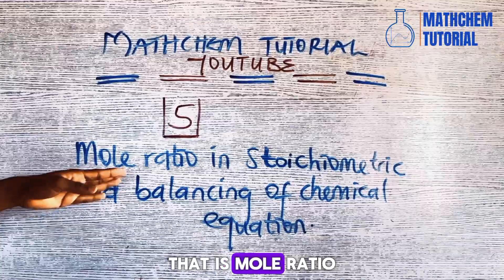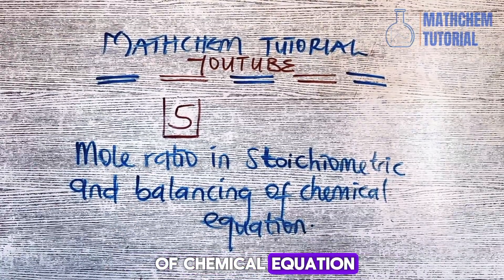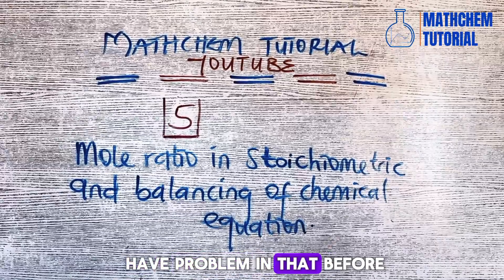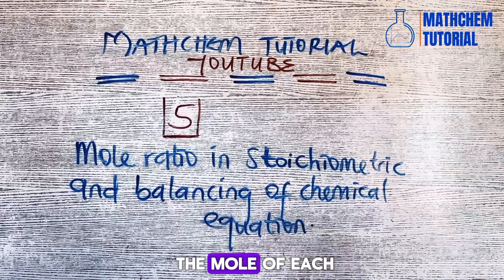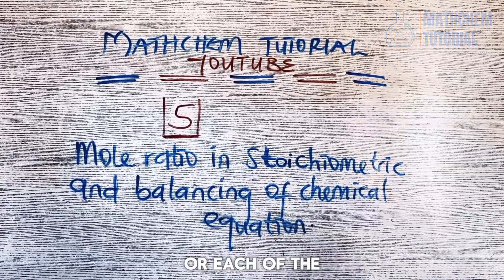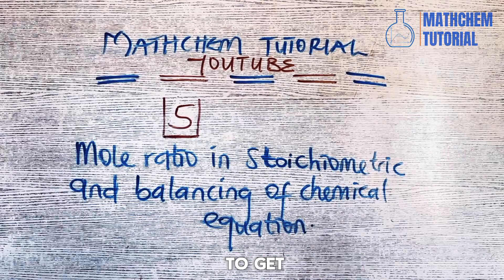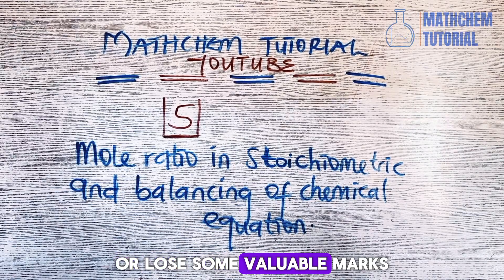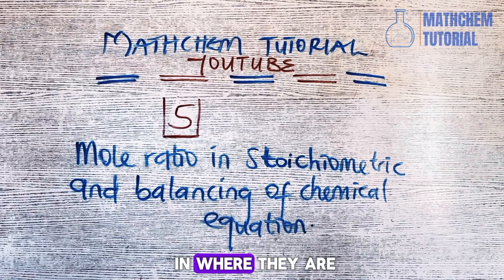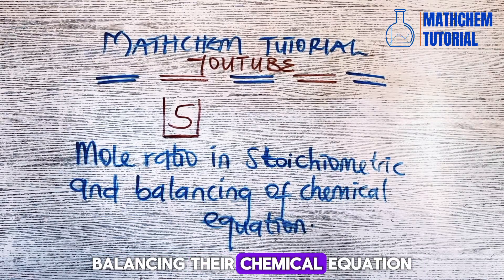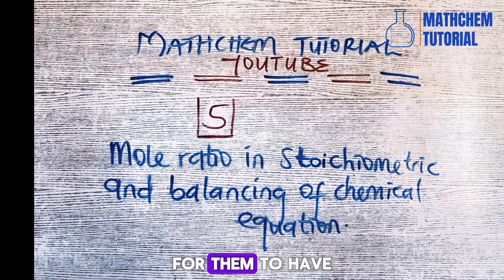Number five is mole ratio in stoichiometry and balancing of chemical equations. Students have problems writing a well-balanced chemical equation and knowing the mole of each reagent or chemical they are using in their chemistry practical, which causes them to lose valuable marks. Students should be very observant and focused when balancing their chemical equations in order to get the correct mole ratio and earn good marks.